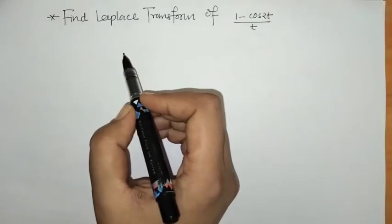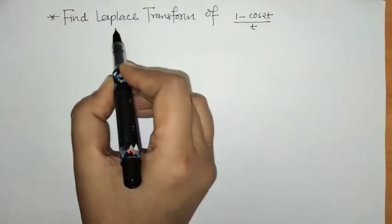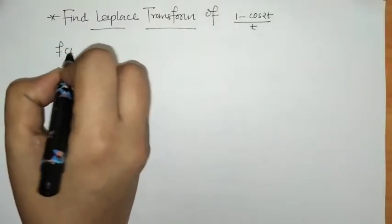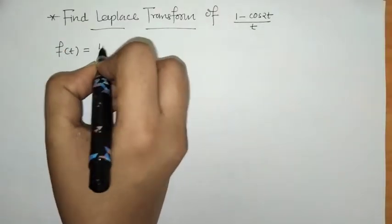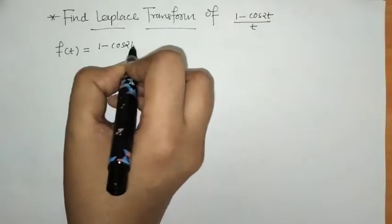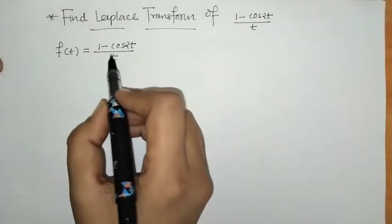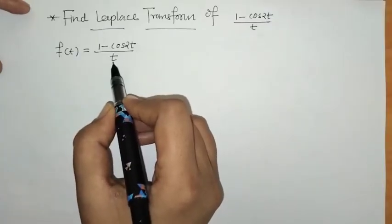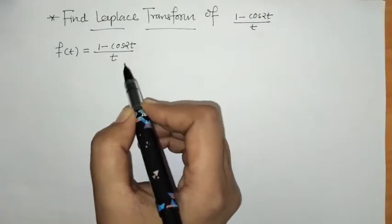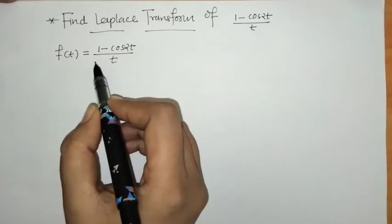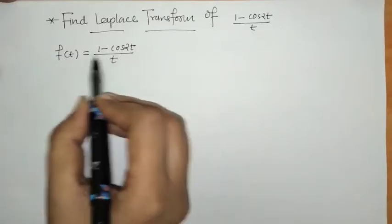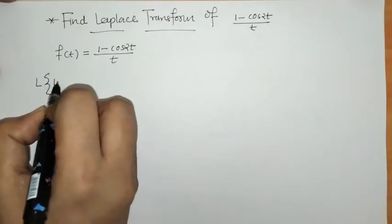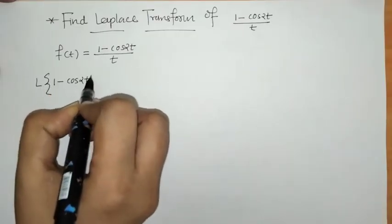Hello everyone, welcome to Unlock Maths. Today we have to find the Laplace transform of f(t) = (1 - cos(2t)) / t. Since we have this numerator divided by t, we have to apply the effect of division by t. So first we have to find the Laplace of the numerator: 1 - cos(2t).